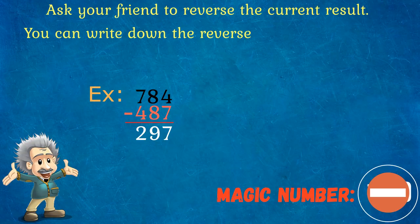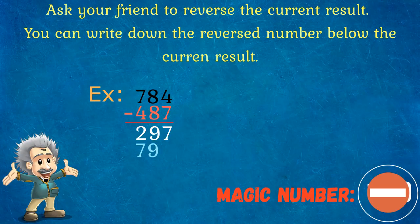As the third step, ask your friend to reverse the current result. Then you can write down the reverse number below the current result.